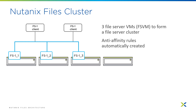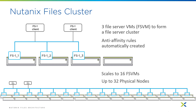You can scale out a file server at any time, so if you want to start small you can add individual nodes as you go. You can also scale up the compute resources of the file server VMs as you need. A single file server instance can grow up to 16 file server VMs, and this can be on a physical cluster of up to 32 nodes.